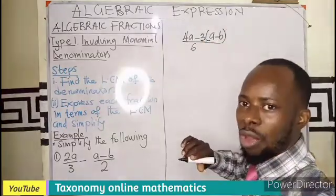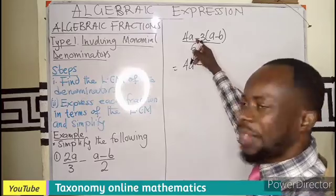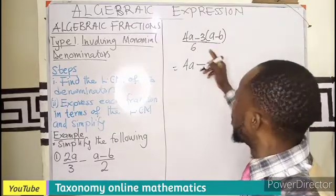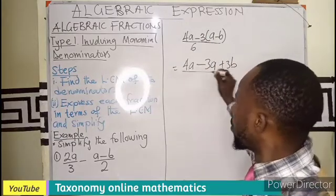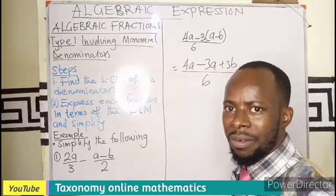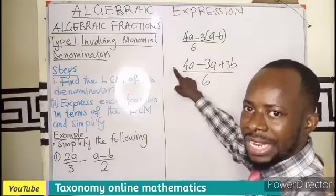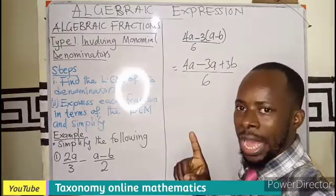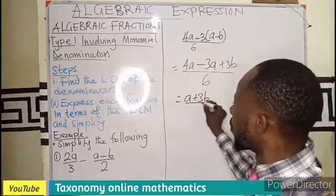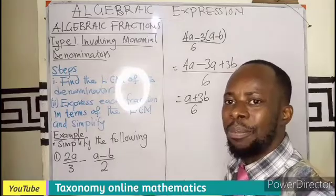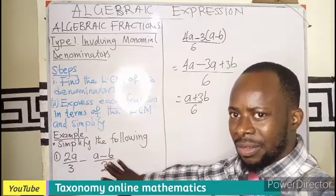So now I can simplify the top, which is going to be 4a minus, a negative in front of the bracket changes the sign inside. So minus 3a minus minus plus 3b all over 6. We are having a, a. So we take the coefficient 4 minus 3 and that will be 1. So 1a, that is just a plus 3b all over 6 is the simplification of this expression.